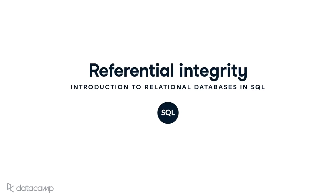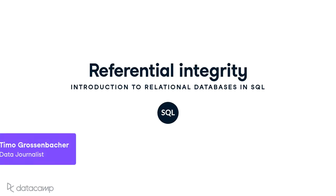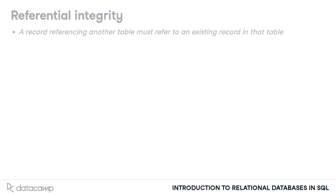We'll now talk about one of the most important concepts in database systems: referential integrity. It's a very simple concept that states that a record referencing another record in another table must always refer to an existing record.